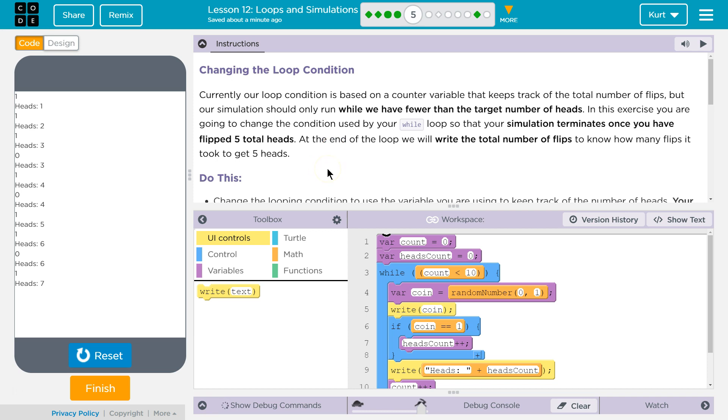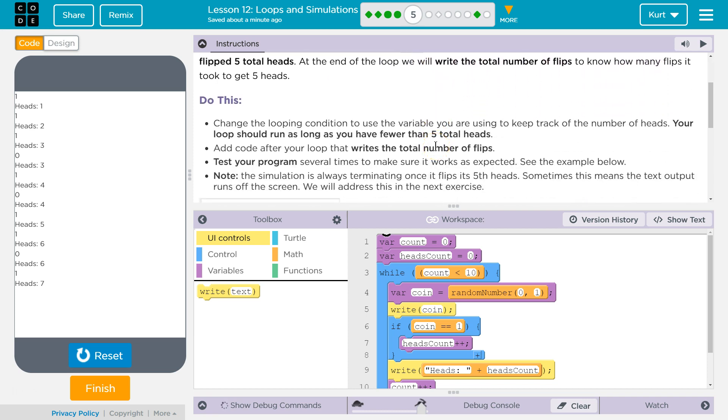At the end of the loop, we will write the total number of flips to know how many flips it took. Do this: Change the looping condition so that you use the variable you are using to keep track of the number of heads. Your loop should run as long as you have fewer than 5 heads.